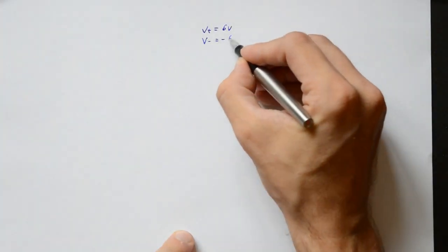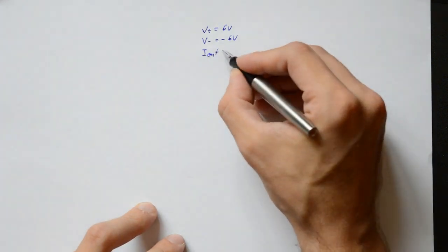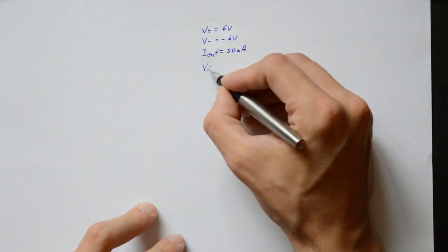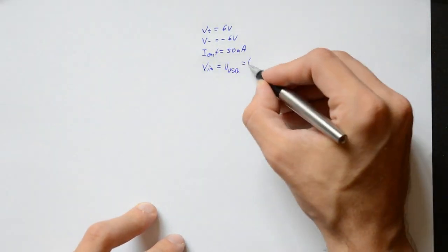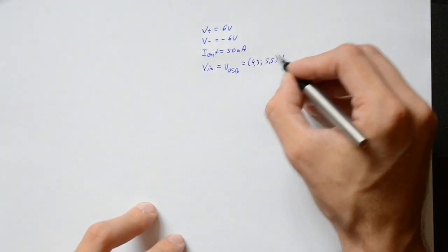So, how to choose all the components? Well, first let's decide what we expect from the power supply. I want an output of about plus minus 6 volts, and a current of 50 milliamps. And it should all be supplied from the USB. So the input is somewhere between 4.5 and 5.5 volts.